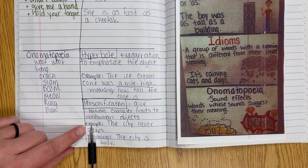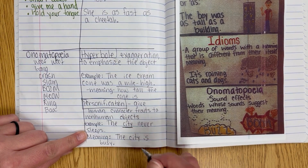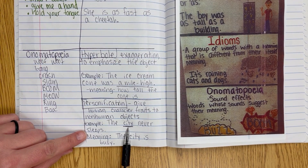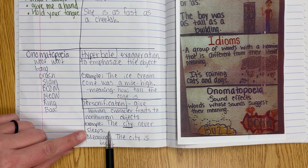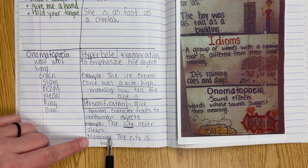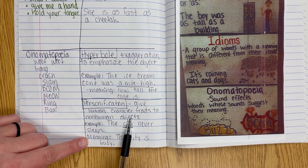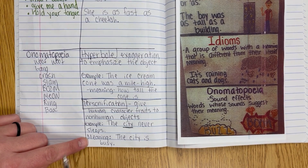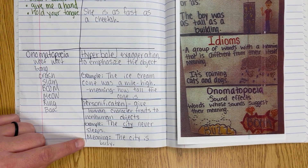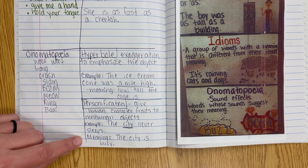So what I mean by that — for example, the city never sleeps. Can a city really sleep? Can they take a nap? No, it's not human. So if you say the city never sleeps, they can't do this human characteristic. What you're meaning is the city is busy. So personification gives an object that's not human those character traits. For example, the flowers danced in the wind. Can flowers dance? No.